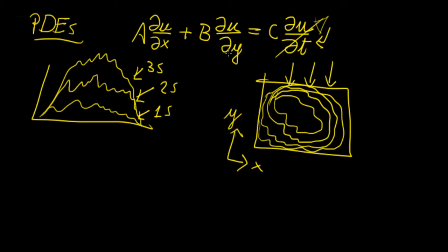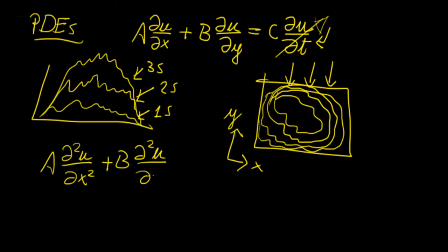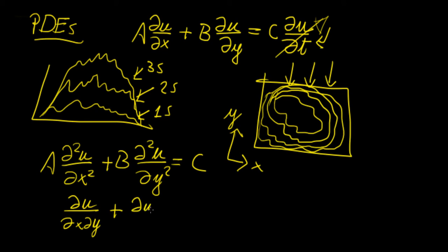That's the main difference between a time-varying differential equation and what we call an equilibrium or stationary partial differential equation. Now, you can have second order PDEs, and notice that coefficients a and b can be functions of x and y as well — they don't necessarily need to be constants. We can also have mixed derivatives, which can make equations a little bit more complicated to solve.